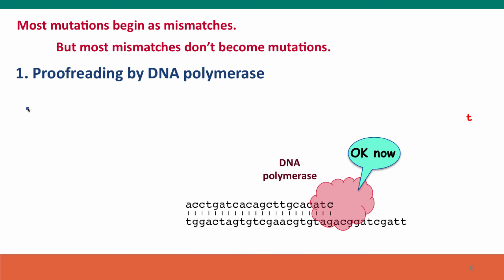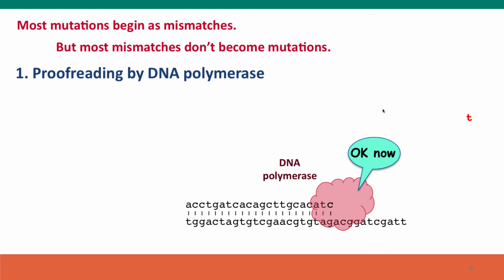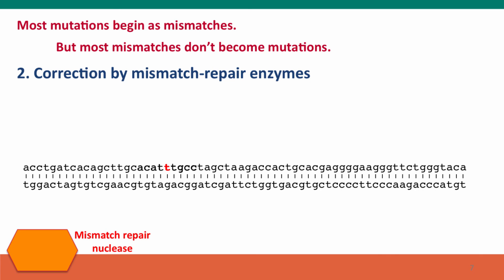In the absence of proofreading, the error rate is about 10⁻⁵ to 10⁻⁶ mismatches per base pair — about 1 in 10,000 to 1 in 100,000 base pairs is the wrong base. That's actually an extraordinarily accurate replication rate for a molecule to achieve, but it's not good enough. With proofreading, the error rate goes down to approximately 10⁻⁸, which is an astonishingly high fidelity rate.